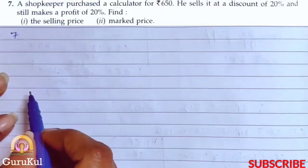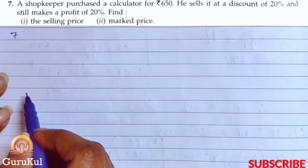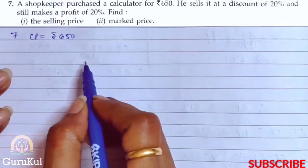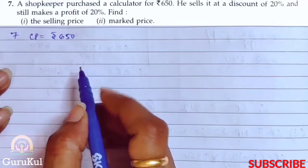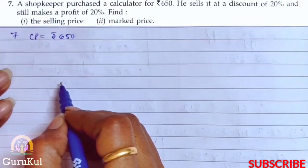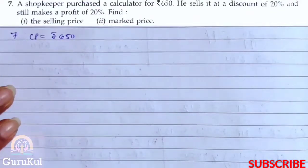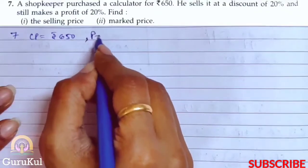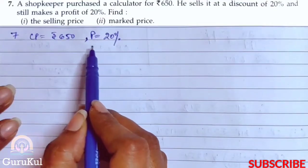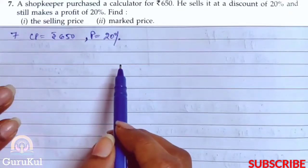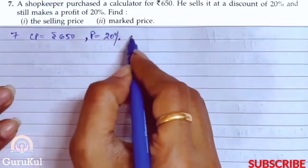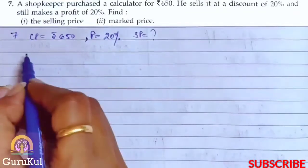Question number 7. A shopkeeper purchased a calculator for rupees 650. That is the shopkeeper's cost price. And then he sold it at a discount of 20% and still makes a profit of 20%. So we need to find the selling price and then the mark price.